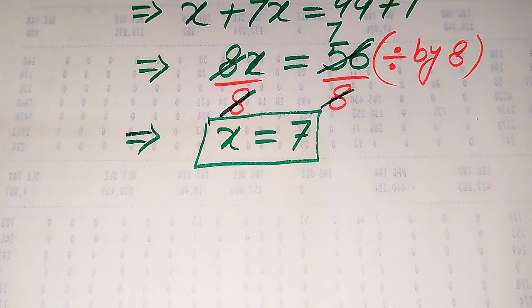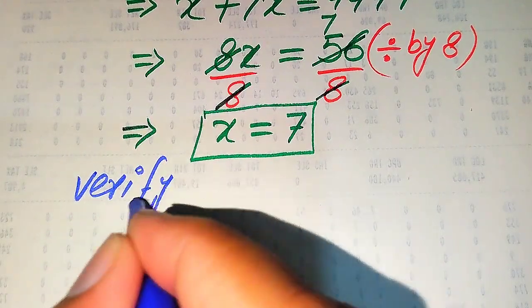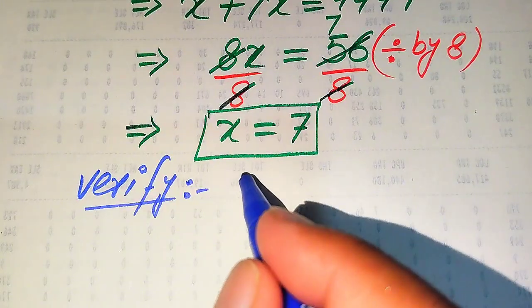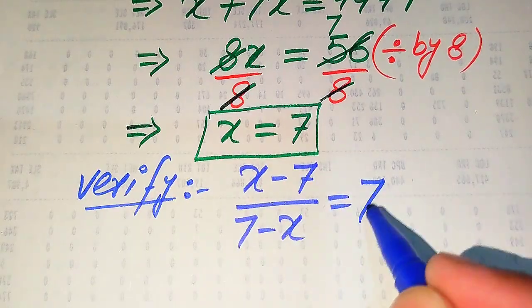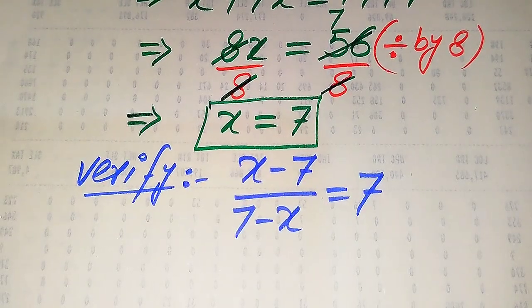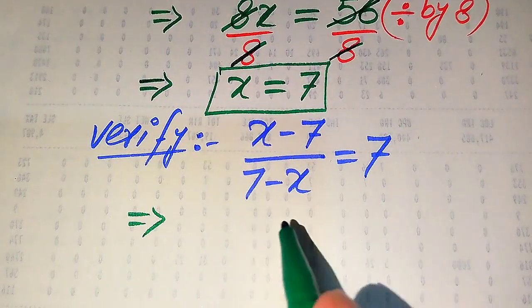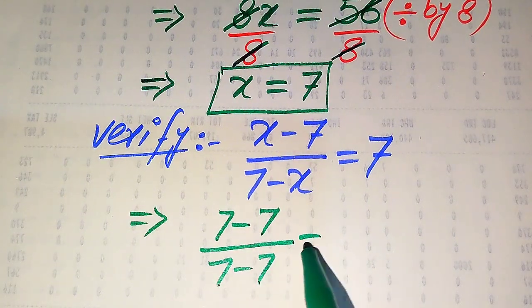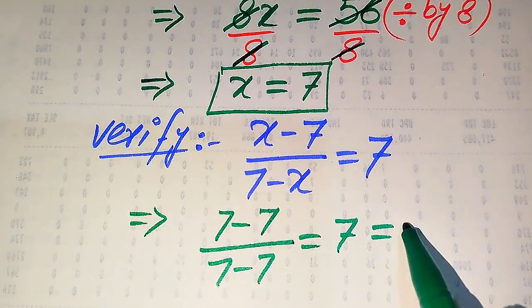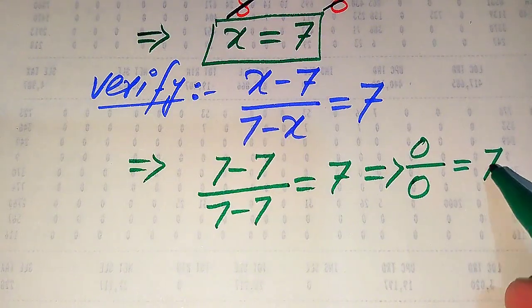In this method we get only one root, which is x equals 7. Now we need to verify whether this value of x satisfies the given equation. Copying the given equation: x minus 7 divided by 7 minus x equals 7. Substituting x equals 7 into the left hand side gives us 7 minus 7 divided by 7 minus 7 equals 7, which simplifies to 0 divided by 0 equals 7.